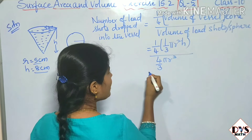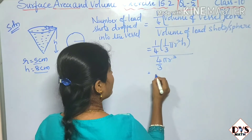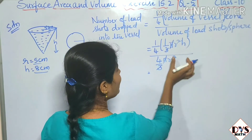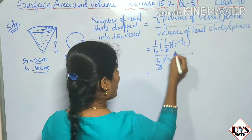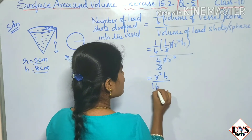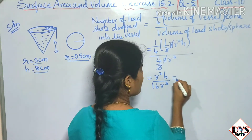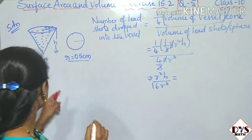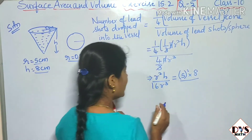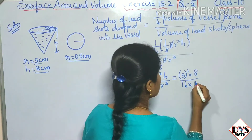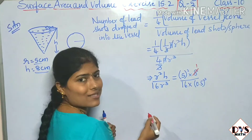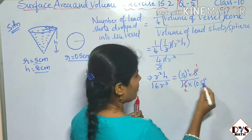Simplifying: π cancels with π, and 3 cancels with 3. The numerator gives r²h, and moving 4 to the denominator gives 16r³. Substituting values: r² = 5² = 25, h = 8, and r³ = (0.5)³. So the expression becomes 25 × 8 divided by 16 × (0.5)³.